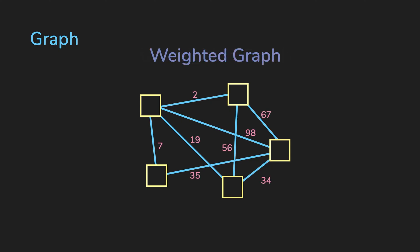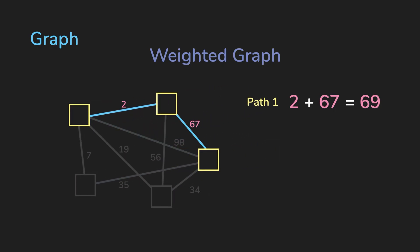A weighted graph is useful to model distance between vertices and run algorithms to find the shortest path. Where the shortest path does not necessarily mean visiting the least amount of nodes this time. You'll have to take the edge weight into account.